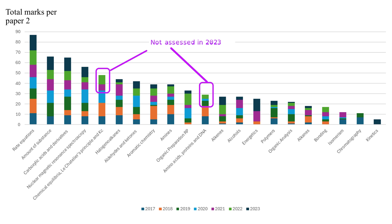No guarantees, but that's not a bad idea when thinking about priorities. Further to the right, amino acids, proteins, and DNA also didn't come up in 2023, so this data is helpful context — though again, there are no guarantees.